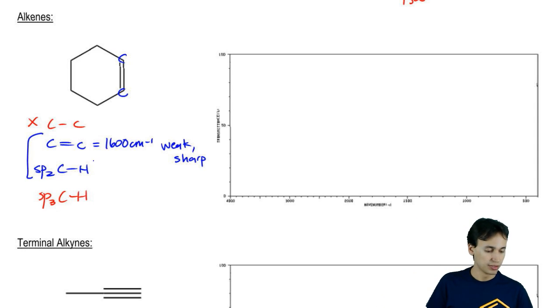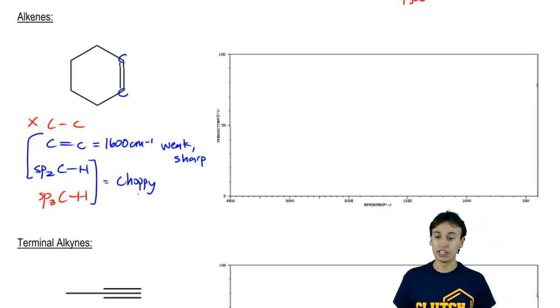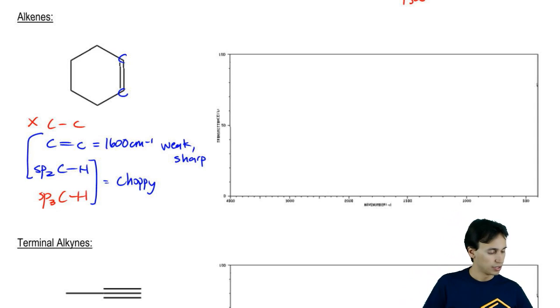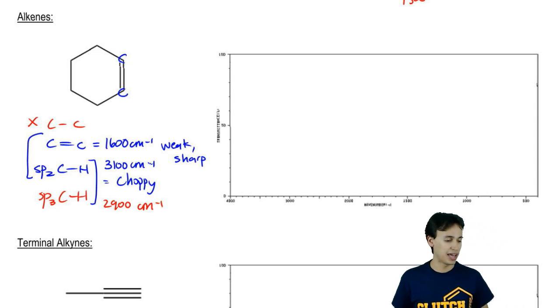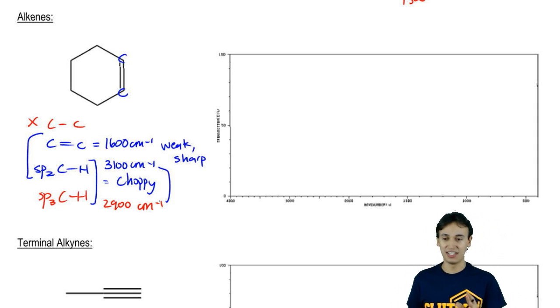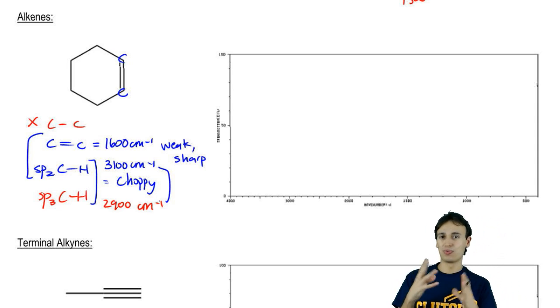Then we would expect both of these to be choppy. And we know their range as we talked about how SP3 is 2900. And we also discussed how SP2 is 3100. So basically, we're going to have a lot of choppiness everywhere from between 29 and 3100. This time, what's going to be very distinct about this graph is that it's going to go past 3000 and it's going to continue to be choppy after the 3000 point.